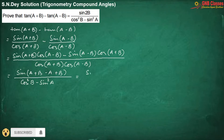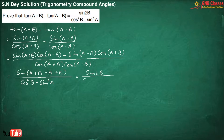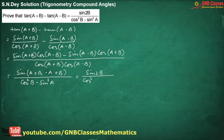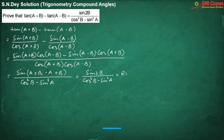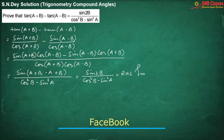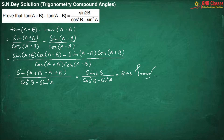So in the numerator we are going to get sin 2B, and in the denominator we are getting cos squared B minus sin squared A, which is nothing but your right hand side. Proved. Have you got it? Okay, move for the next problem.